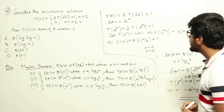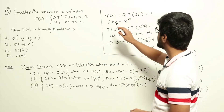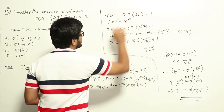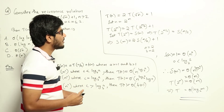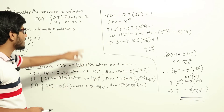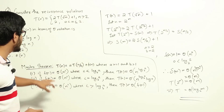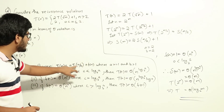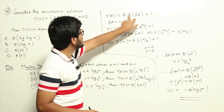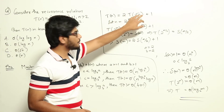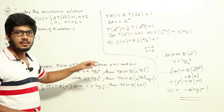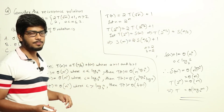Let us try to solve this question. The recurrence relation given is T(n) = 2·T(√n) + 1. This is not in a form where we can apply Master's Theorem directly, because Master's Theorem requires the form T(n) = a·T(n/b) + f(n). Here it is 2·T(n^(1/2)), i.e., root n, so we can't apply Master's Theorem directly and need to convert it to another form.